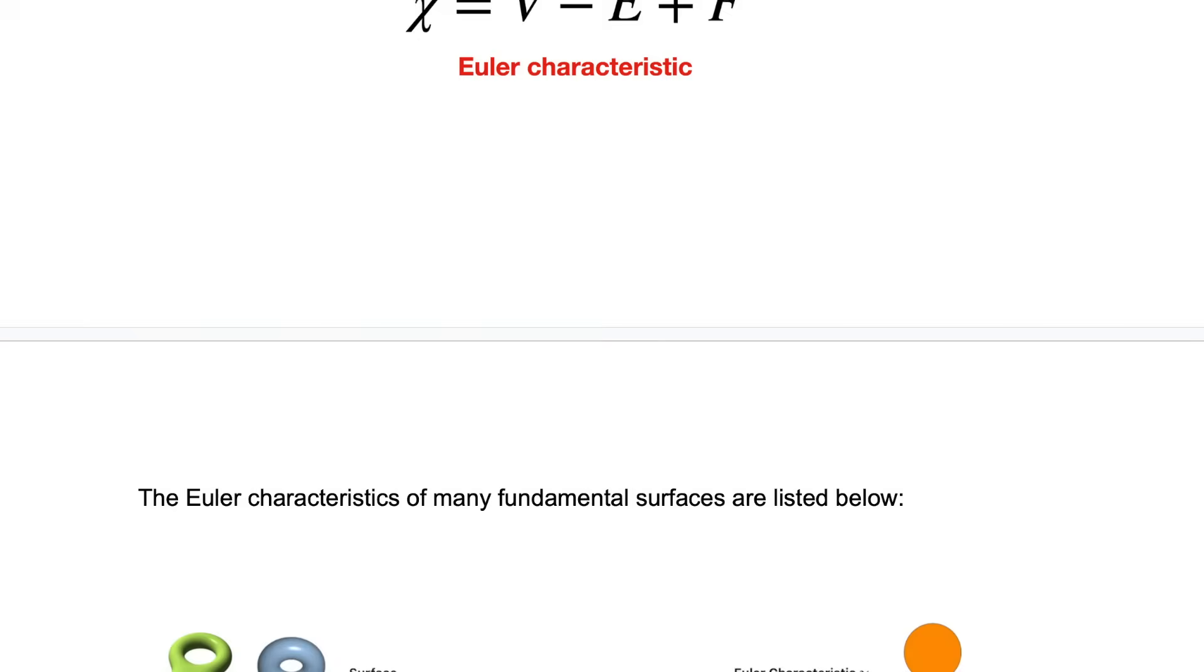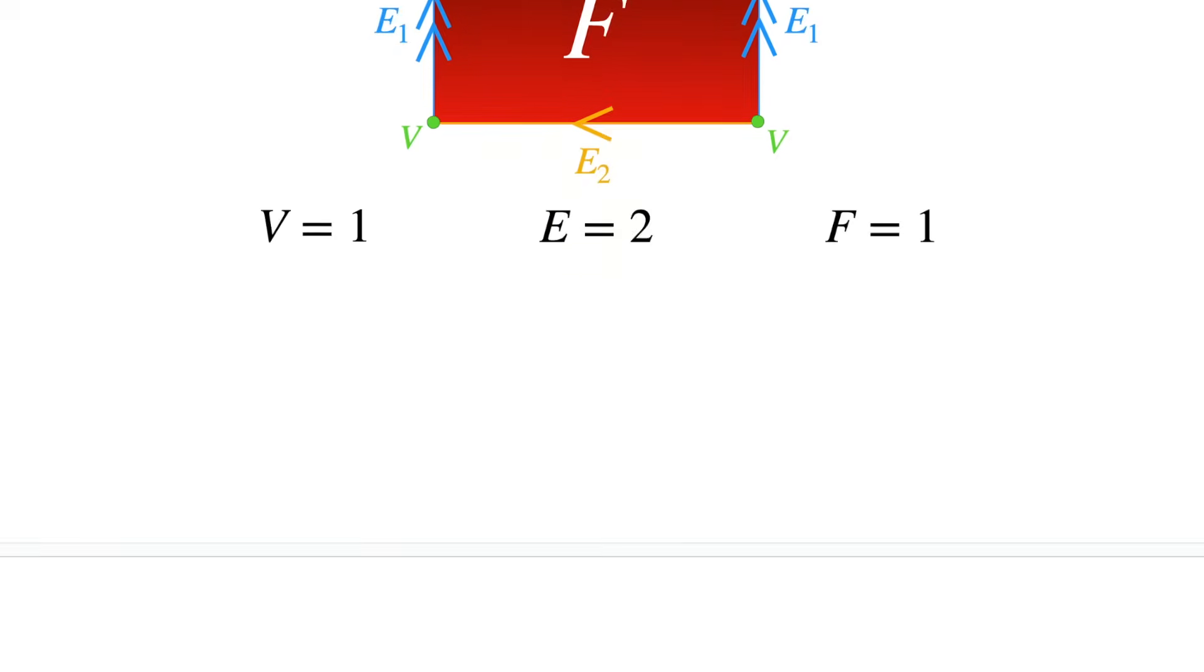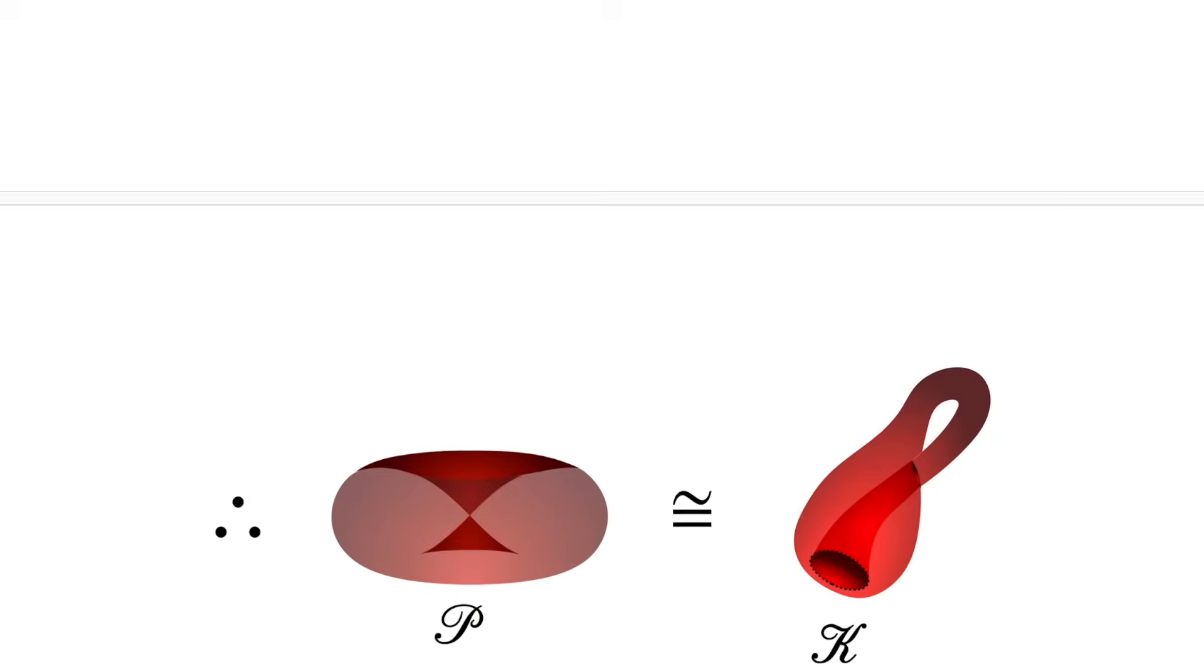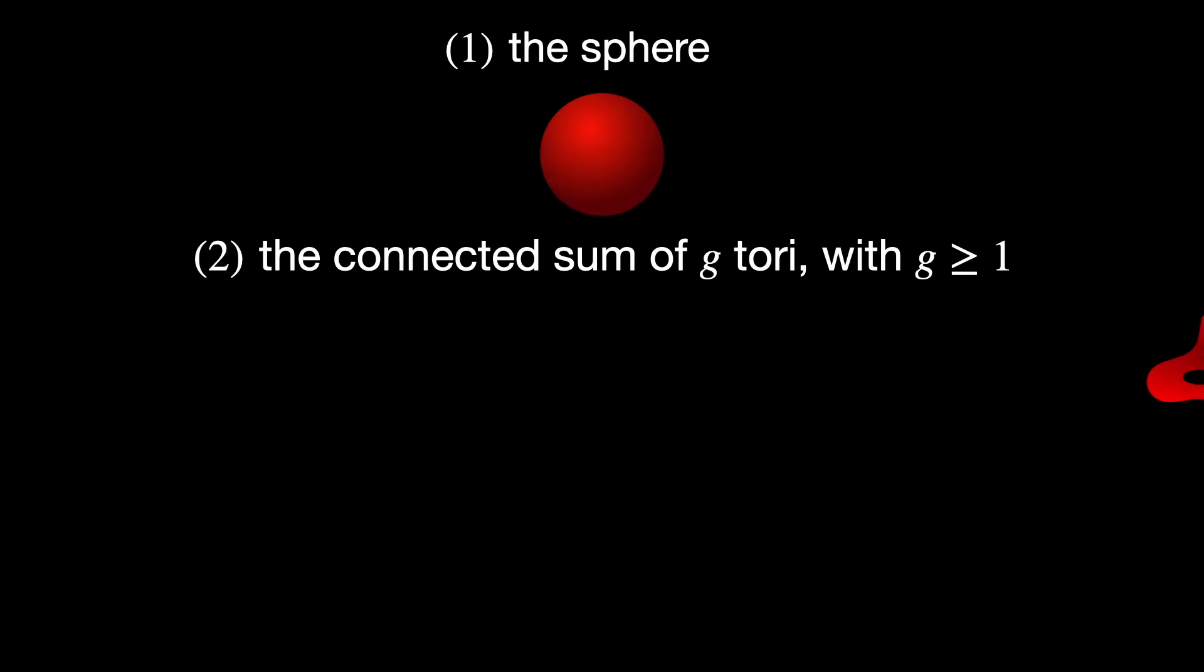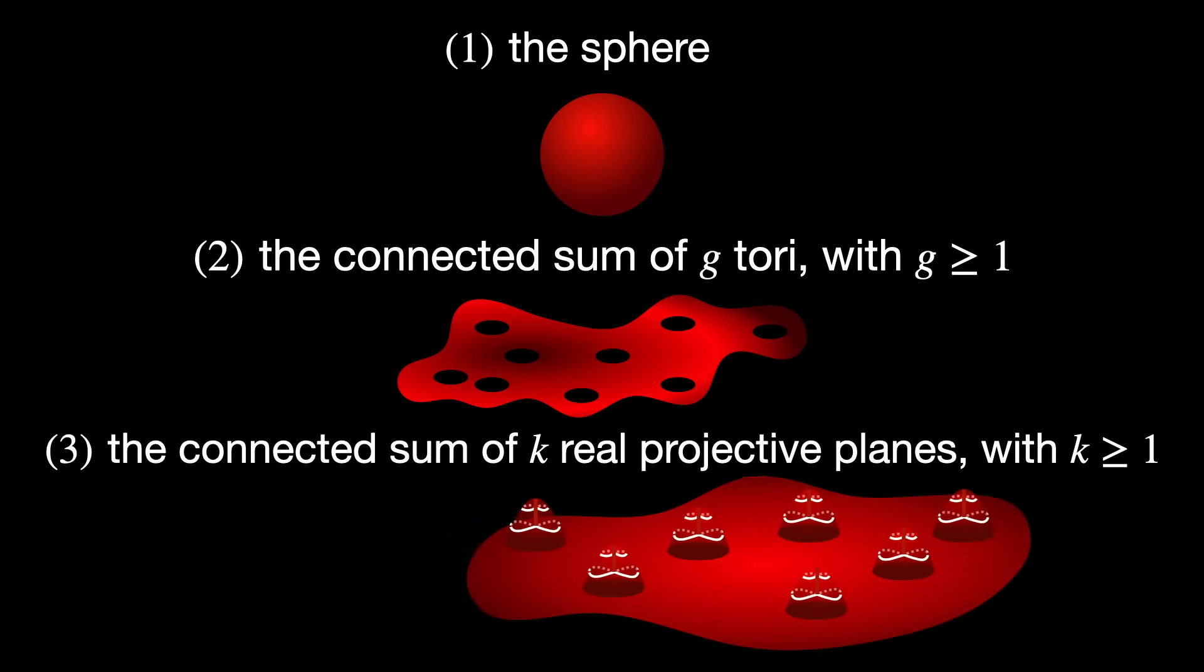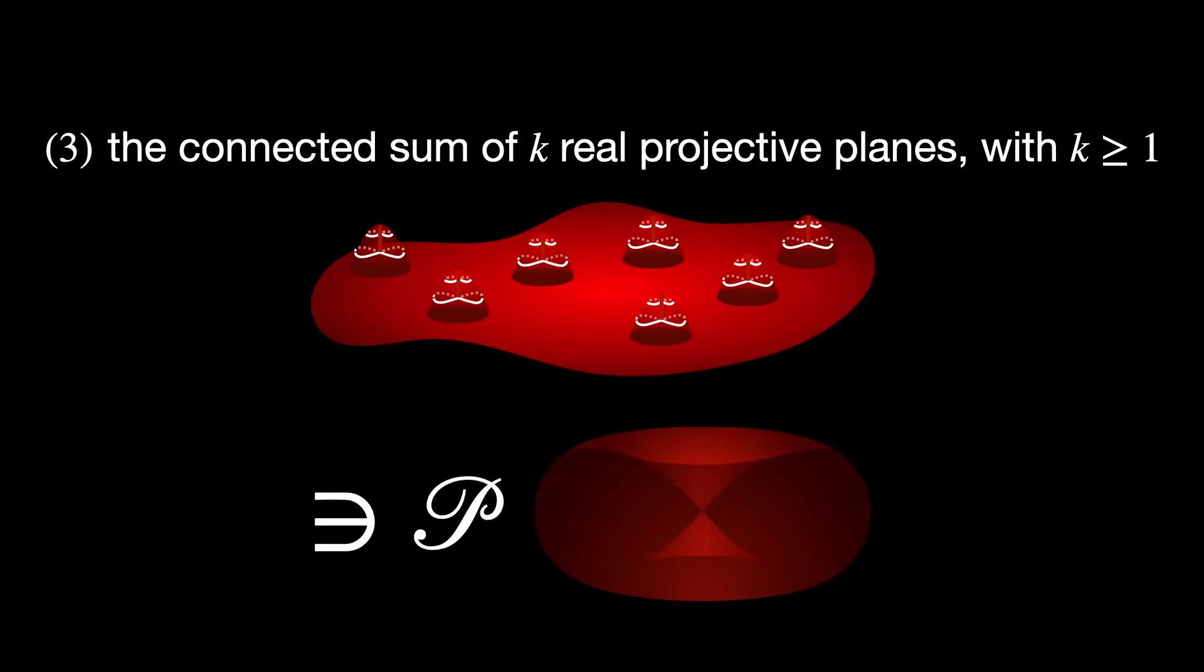To be very honest, the Padushka surface cannot be a new topological surface because of something called the classification theorem of closed surfaces. You'll find more details in the PDF link. But basically, it states that any connected closed surface belongs to one of the following three families: the sphere, the connected sum of g tori with g greater or equal to 1, and the connected sum of k real projective planes with k greater or equal to 1. The Padushka surface definitely belongs to the third family.